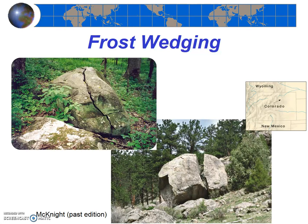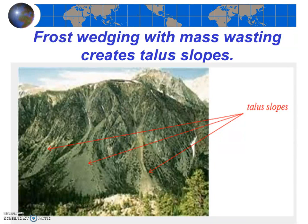Frost wedging also plays a big role up in the Sierras, especially in the springtime when the freeze and thaw occurs pretty much every day. As frost wedging occurs in a mountainous environment, the broken rocks fall — which is mass wasting due to gravity — and the resulting landforms are called talus slopes, also called talus cones. The photo here shows talus slopes in Yosemite National Park. These rubbly piles of rocks along the base of a mountain were likely put there by mass wasting, caused initially by frost wedging.